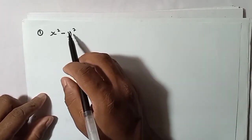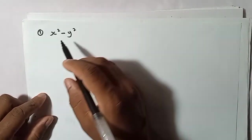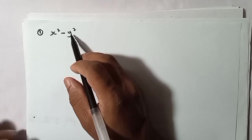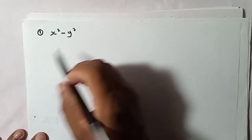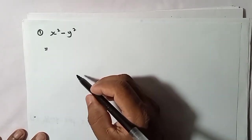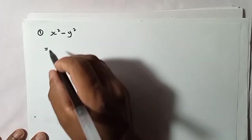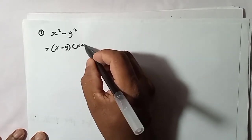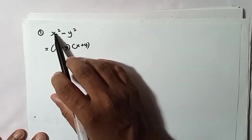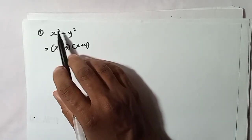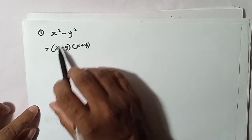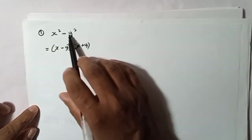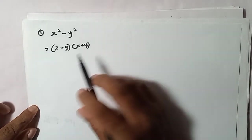Here you have x squared minus y squared — that is, something squared minus something squared. When you have this type of expression, you can very easily write the answer. If they tell you to factorize, you write x minus y times x plus y. The same two terms, one with minus and one with plus — very simple.